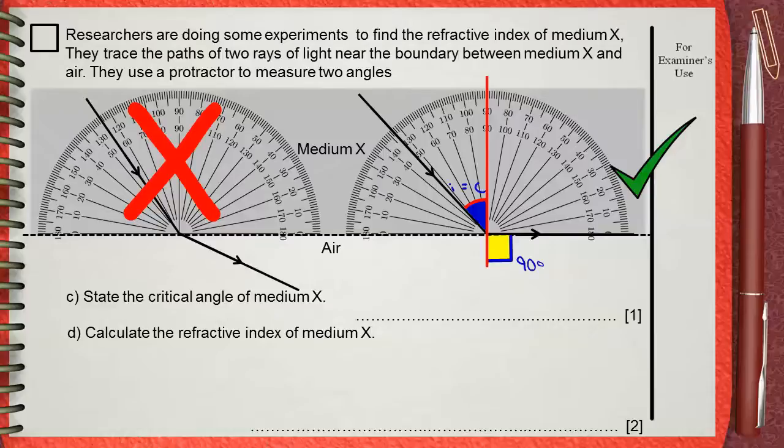the zero of the protractor must be on the normal. This protractor, the 90 is on the normal. We need to measure this angle, which is between 47 and 90. This angle is 90 minus 47, 43.